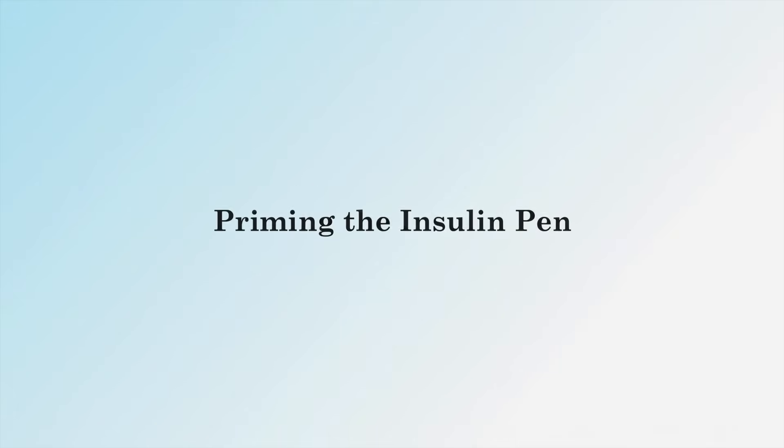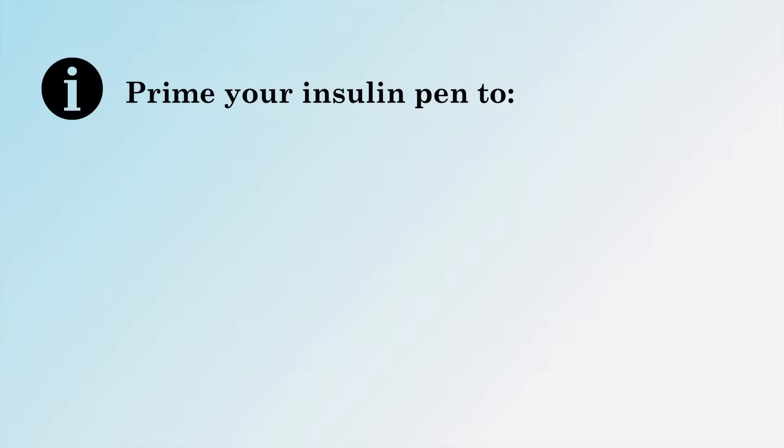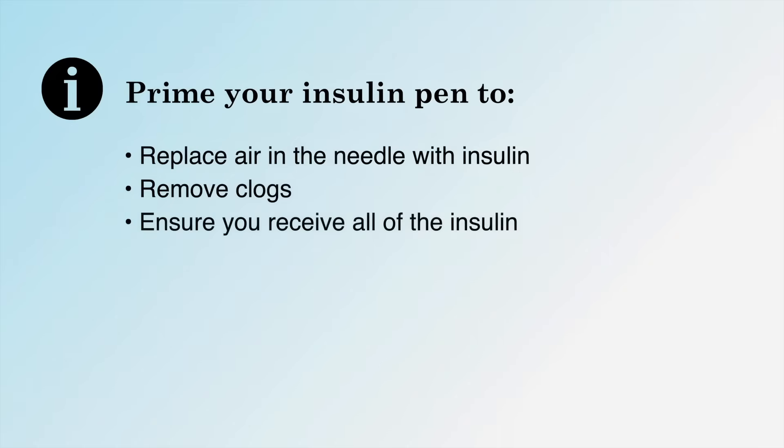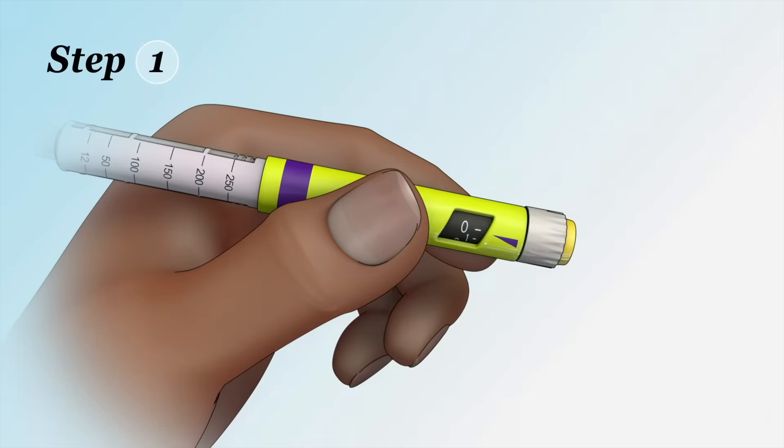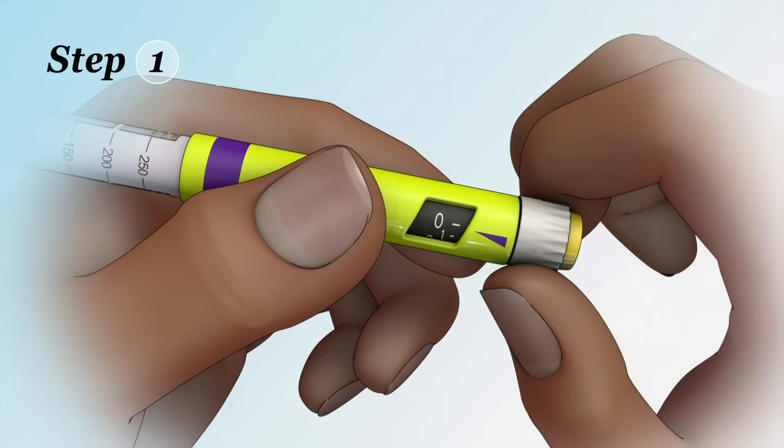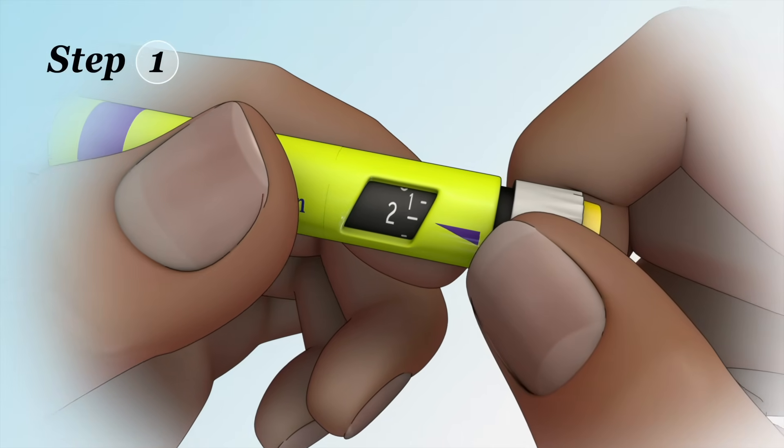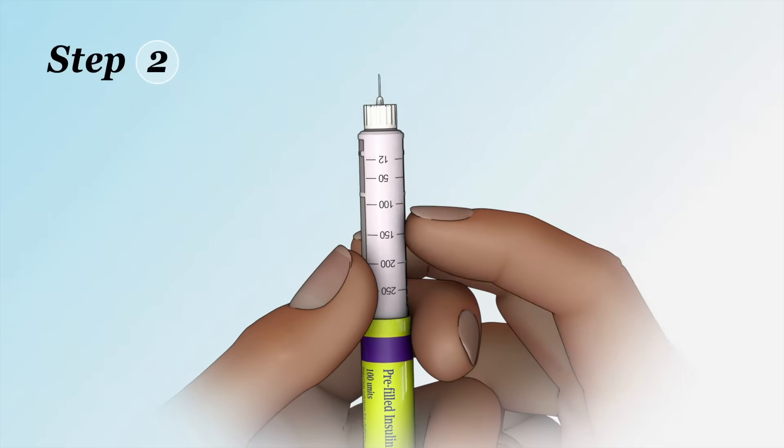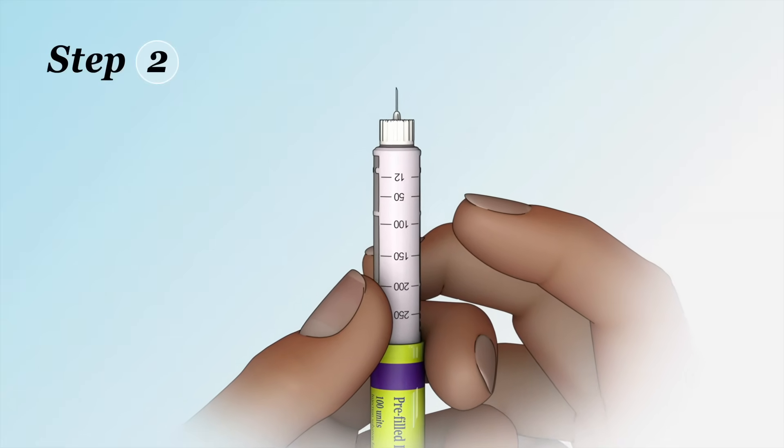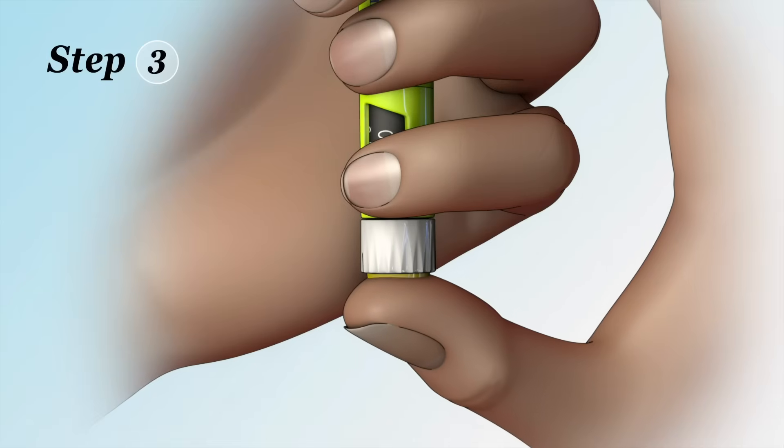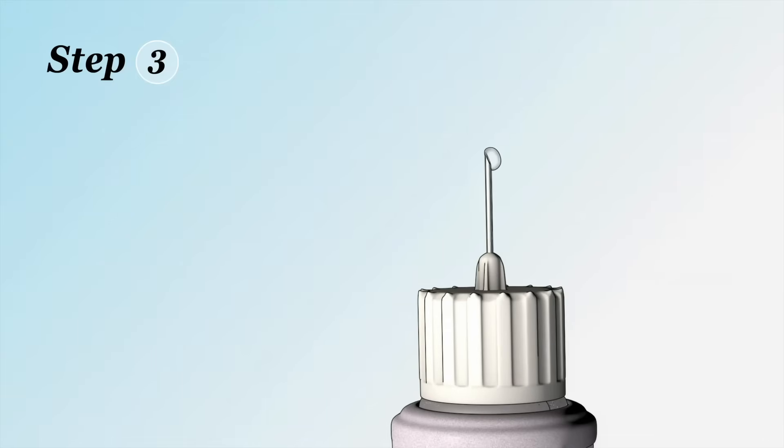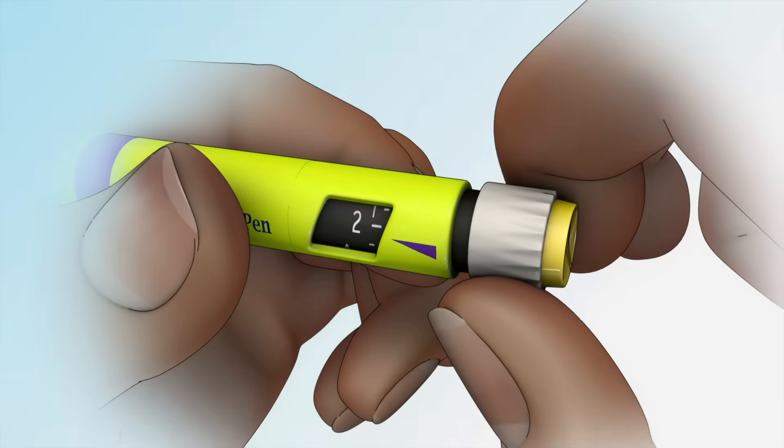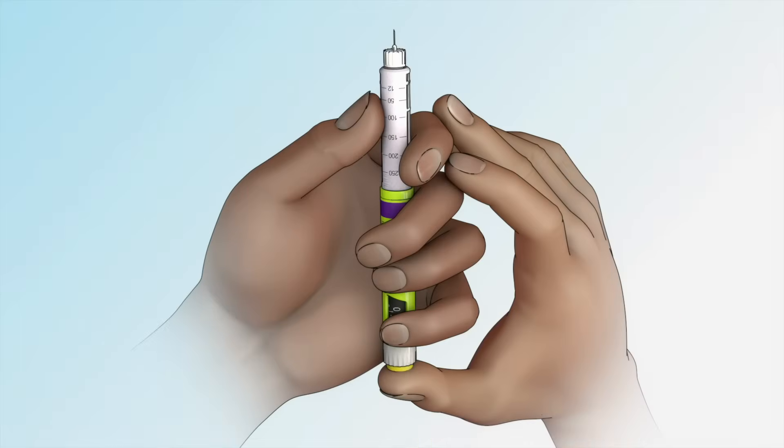Priming the insulin pen. Priming the insulin pen replaces the air in the needle with insulin and removes any clogs or blockages. This ensures that you receive all of the insulin you intend to inject. Step 1: Turn the dosage dial until you see two units displayed in the dosage indicator. Step 2: Hold the pen with the needle pointing up. Gently tap the end of the pen near the needle two or three times. Step 3: Press the injection button all the way in, until a drop of insulin appears on the tip of the needle. You may need to repeat steps 1 through 3 before seeing insulin appear on the tip of the needle.